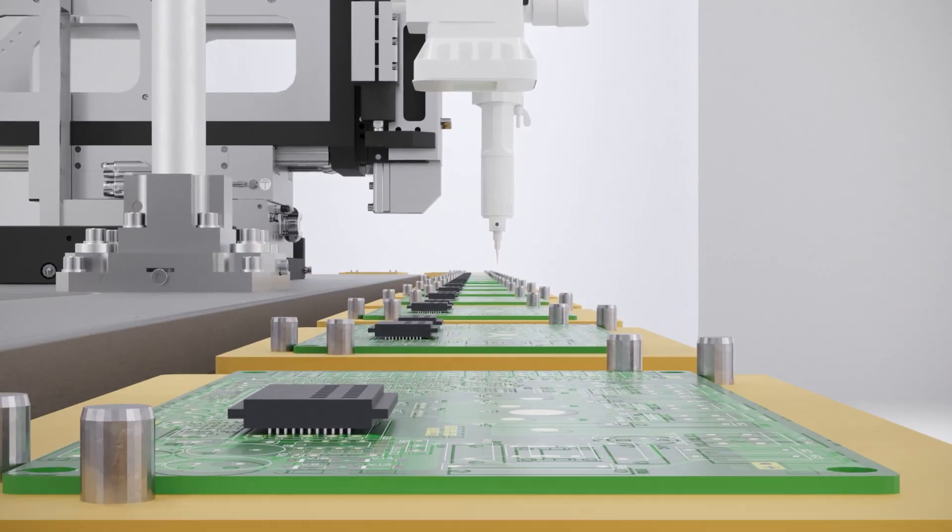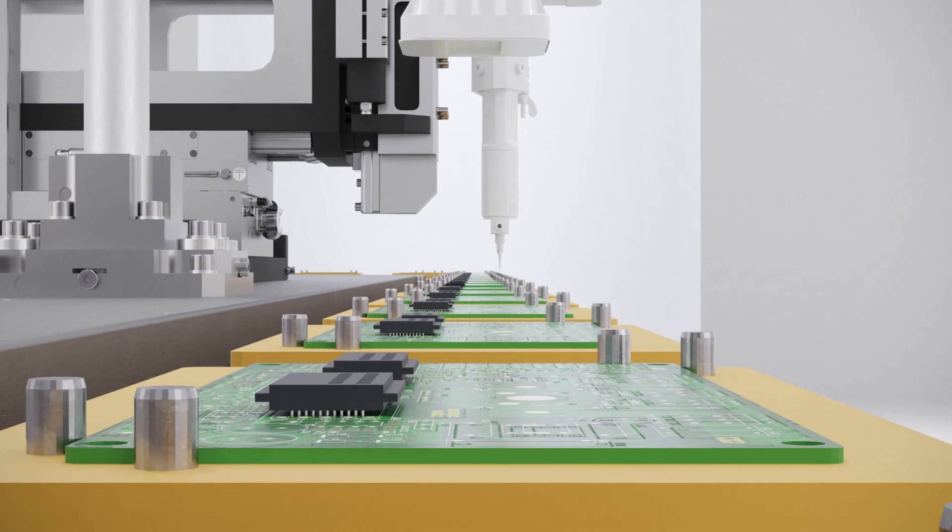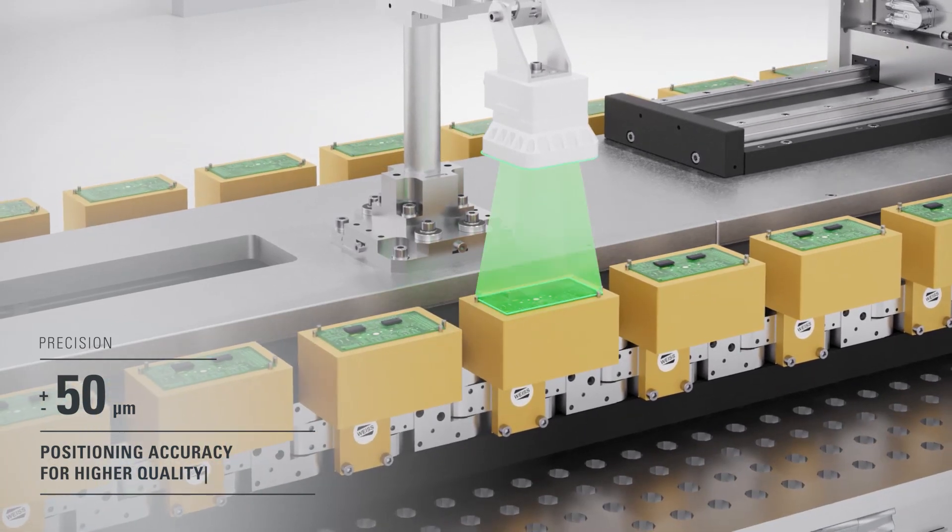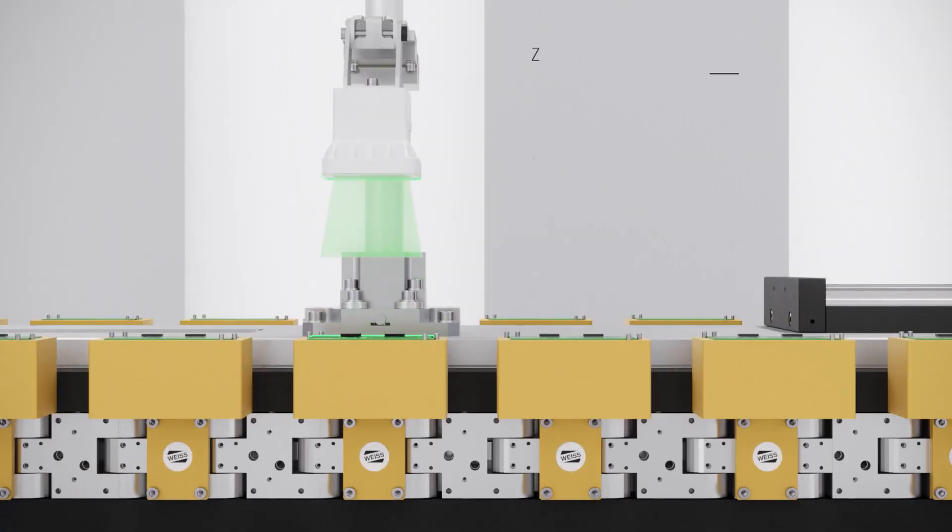A visual quality inspection follows directly after the assembly process. The high degree of positioning accuracy of plus minus 50 micrometers allows for the most precise work steps at a high speed.